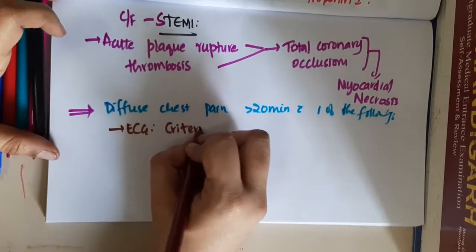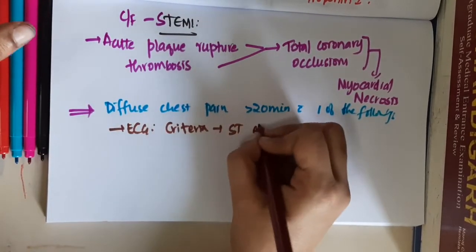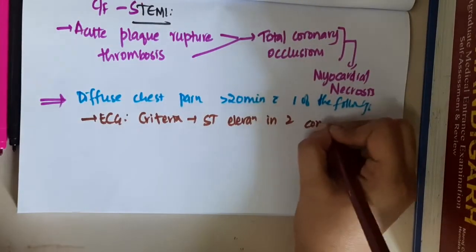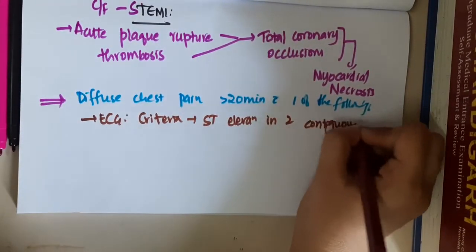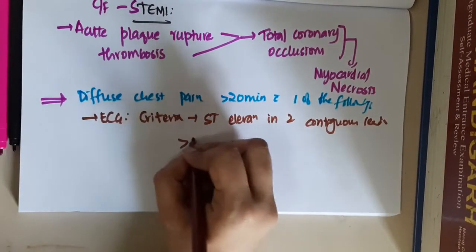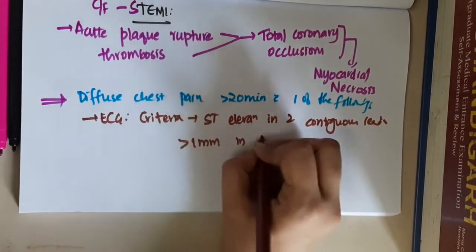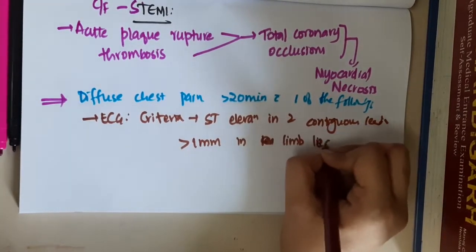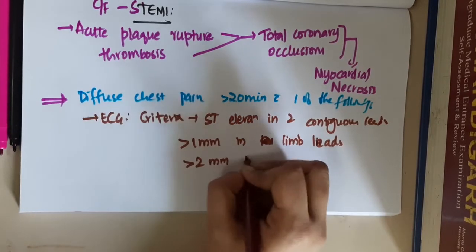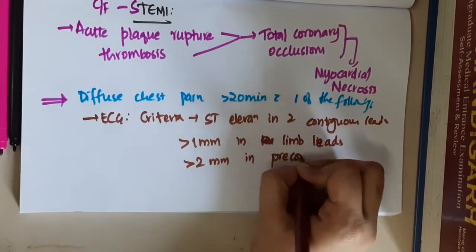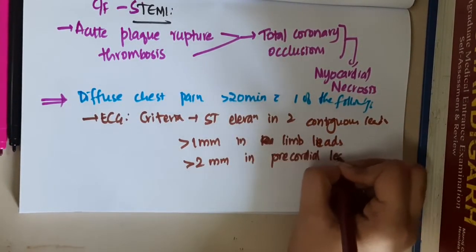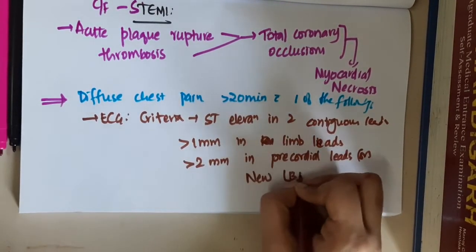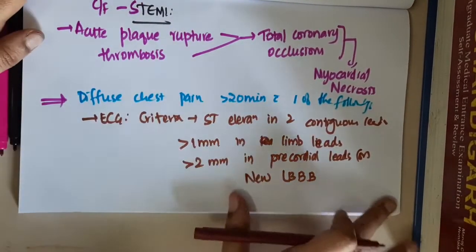The ECG criteria: ST segment elevation is seen in two contiguous leads — elevation of 1 millimeter in limb leads, and elevation of more than 2 millimeters in precordial leads. Or there can be a new left bundle branch block. This is the ECG criteria.